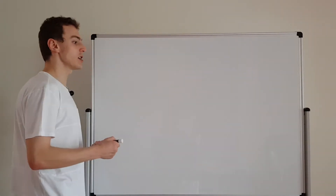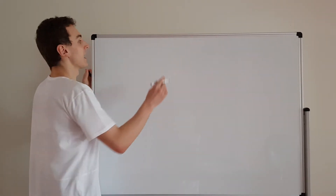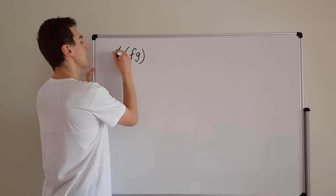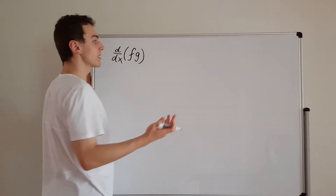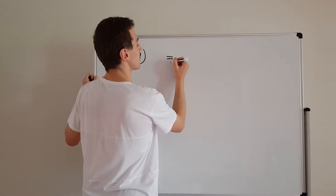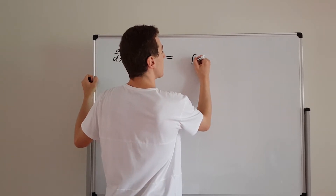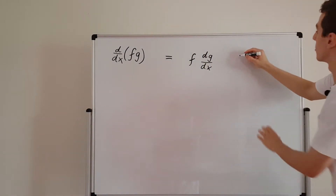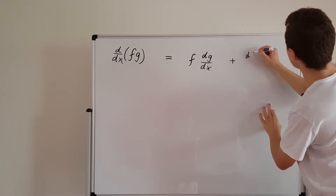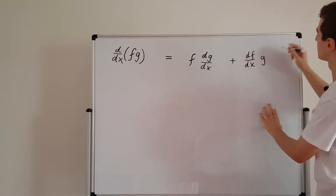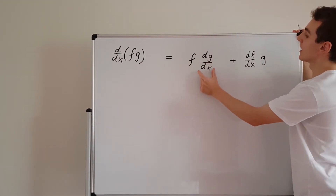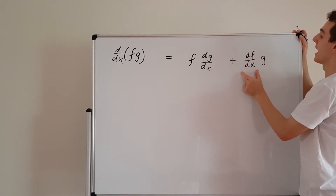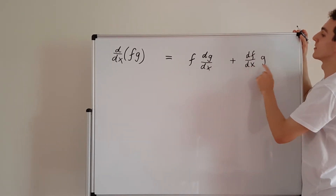If we write down the product rule for differentiation — describing when you have the product of functions f and g and you want to take their derivative with respect to x — this is going to equal the sum of two terms: a term with f times the derivative of g, and a term with the derivative of f times g. In the first term we differentiate g and leave f unchanged, and in the second term we differentiate f and leave g unchanged — we've just swapped the derivative between the two terms.